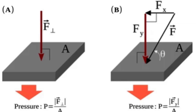Uniform pressure: unlike tectonic stresses, which act directionally — e.g., compression or shear — confining pressure is isotropic, meaning it acts uniformly in all directions, horizontally and vertically. This uniformity is due to the isotropic distribution of the gravitational force. As a result, rocks experience pressure from above, below, and all sides equally.